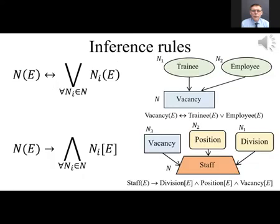Schemas of notions are rules of inference, and the notional structure is a formal theory that preserves the truth of all consequences deduced within it. From the schema of notion generalization follows the rule: entity E belongs to notion N if and only if it belongs to at least one private attribute of N. From the schema of notion association follows the rule: if entity E belongs to notion N, then the private attributes of E are private attributes of N.